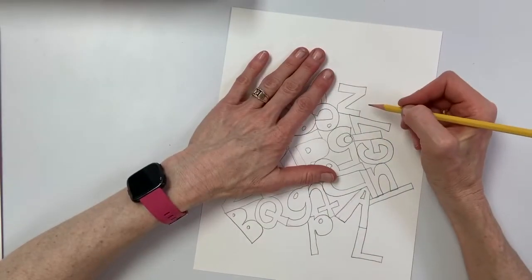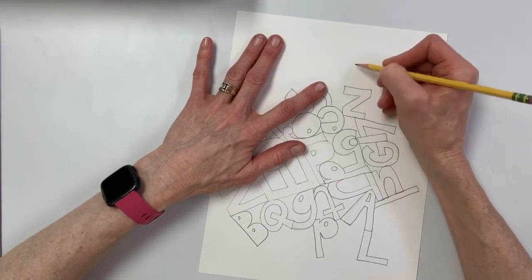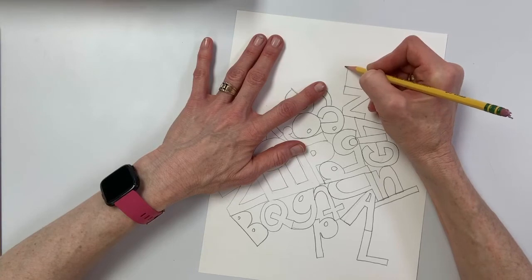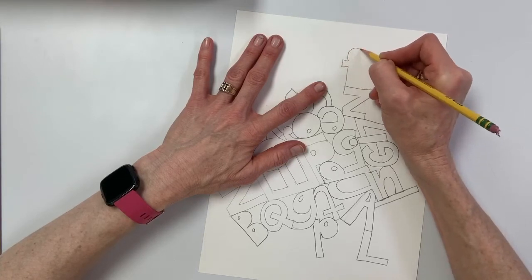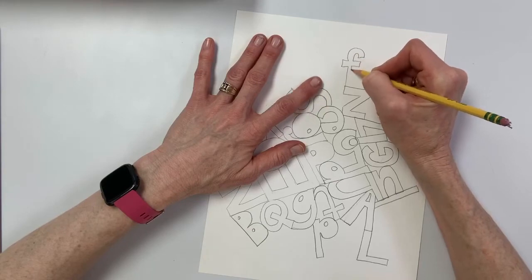I'm going to do about right here - I'm going to do a bubble letter F. I do like that F.